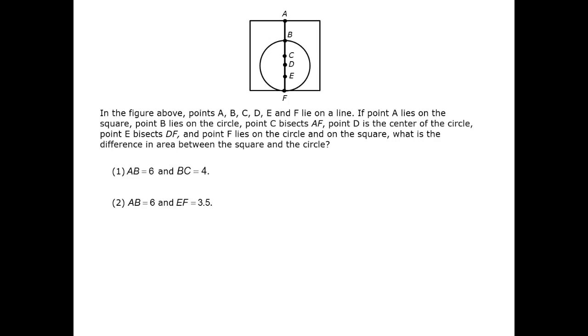The circle is centered on D, so BD or DF would give us the radius, and hence the area of the circle for one thing. Let's turn to the data statements separately first.